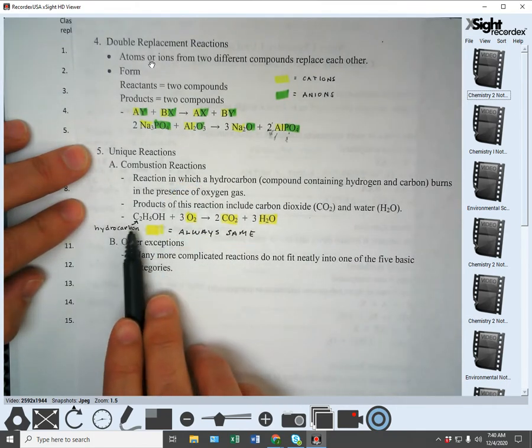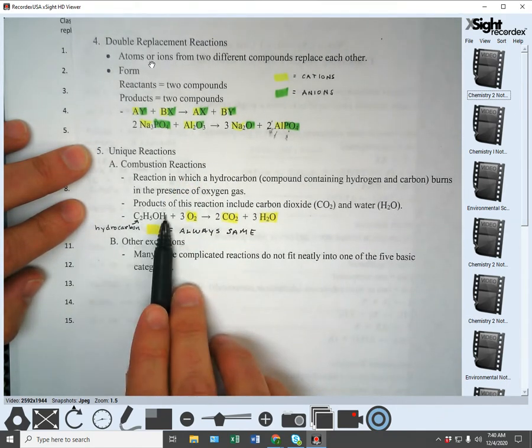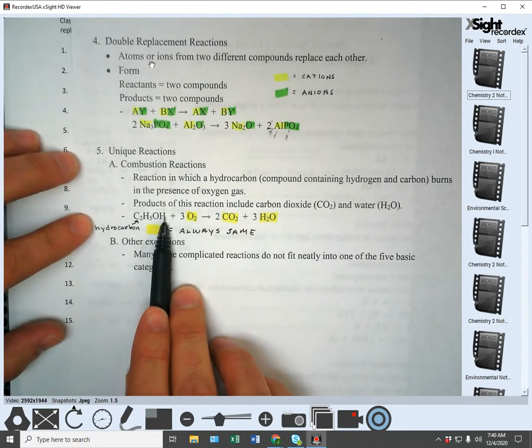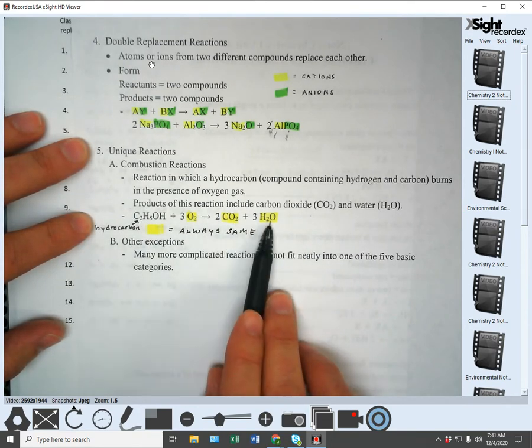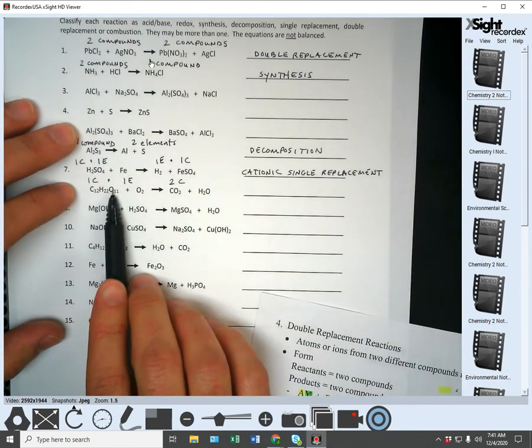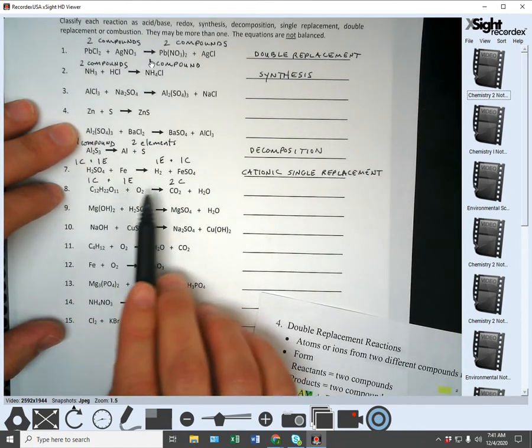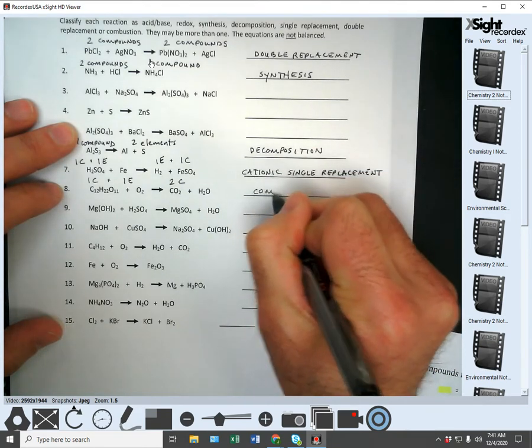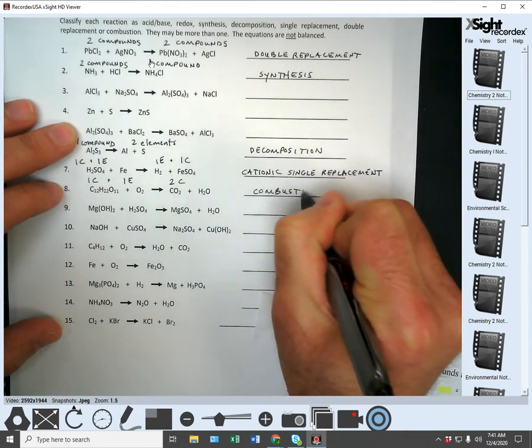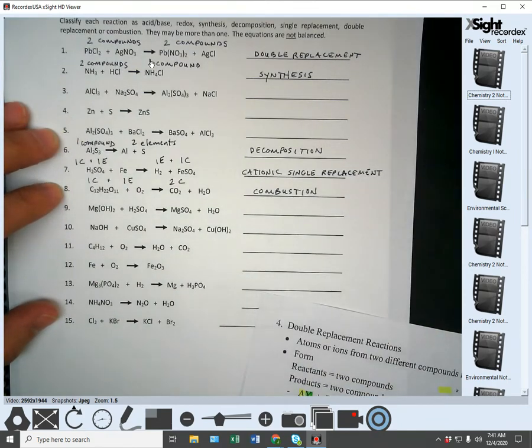Combustion reaction needs to be a hydrocarbon, something made of carbon. Hydrogen can have oxygen, doesn't have to, but it can. Carbon hydrogen plus oxygen gas, giving you carbon dioxide and water. Carbon hydrogen and oxygen, plus oxygen gas, carbon dioxide and water. This is a combustion reaction.